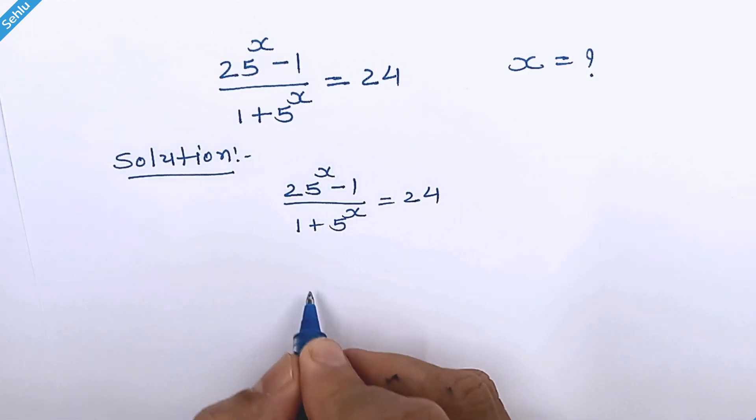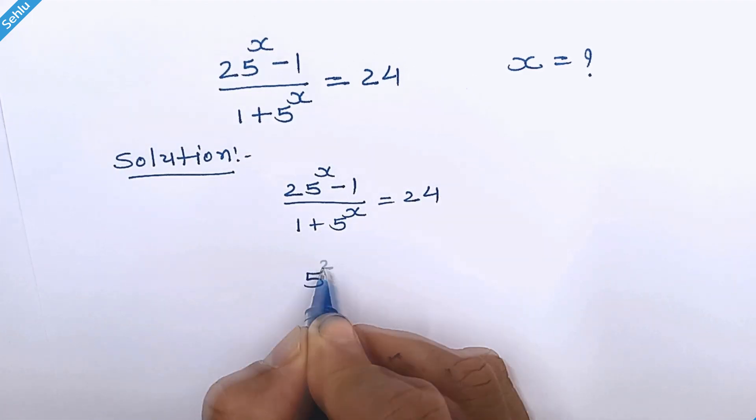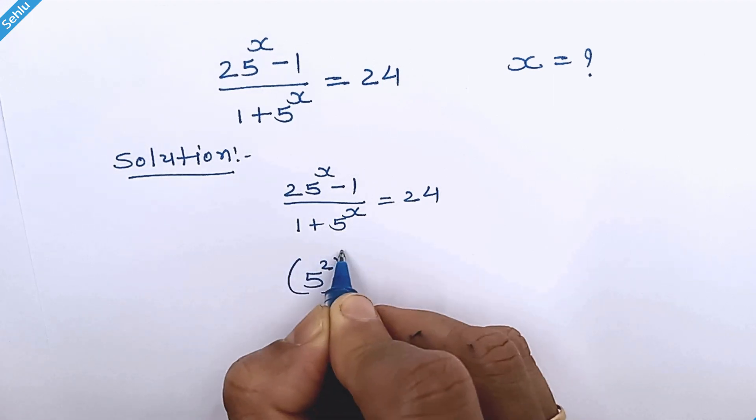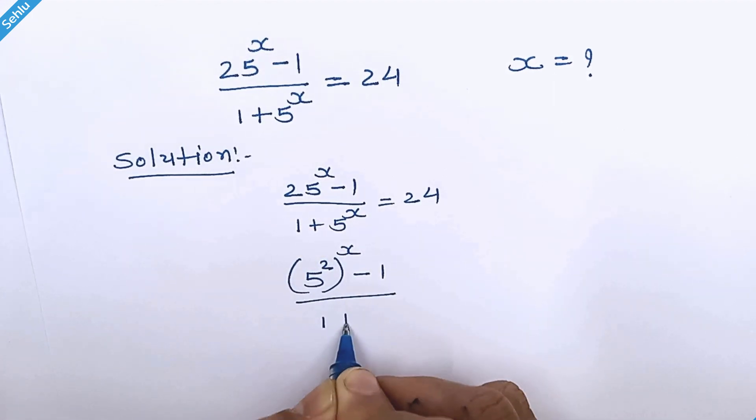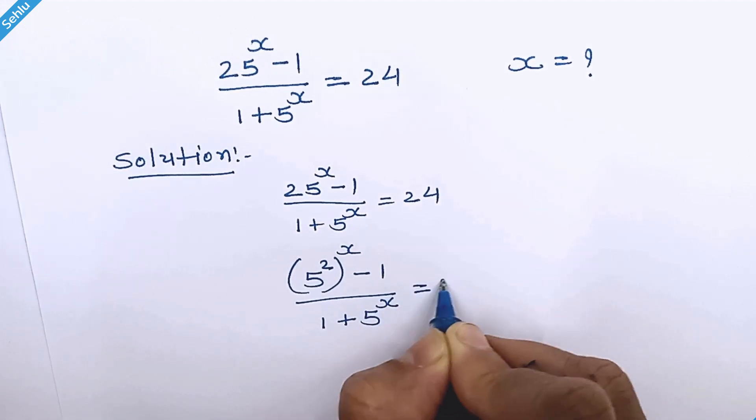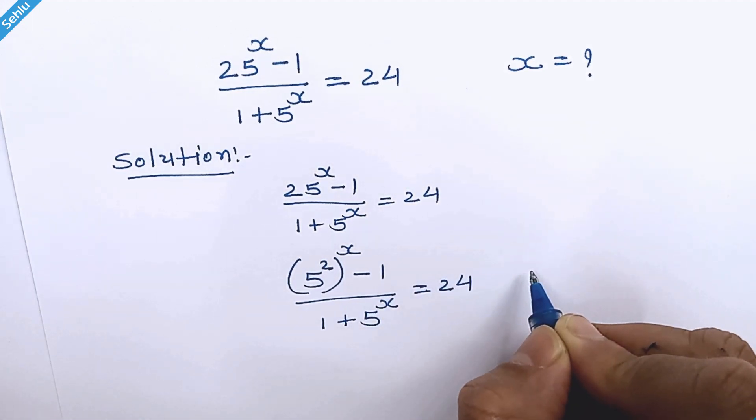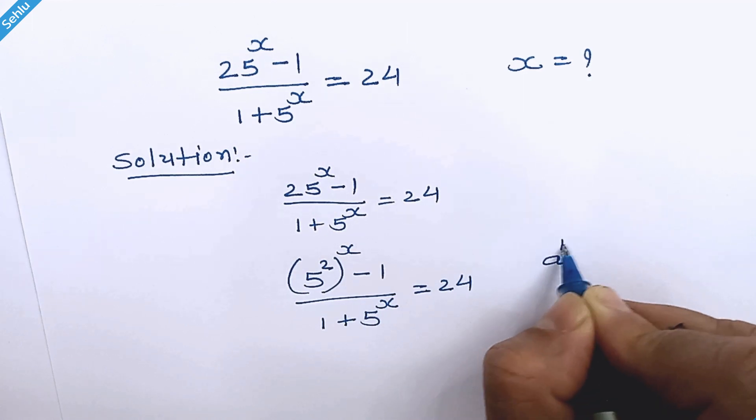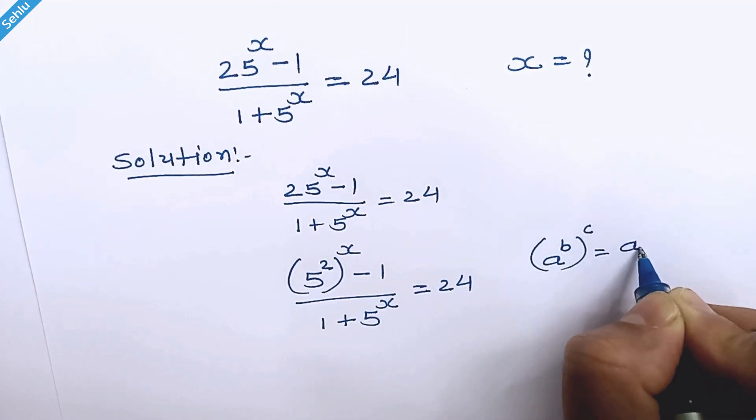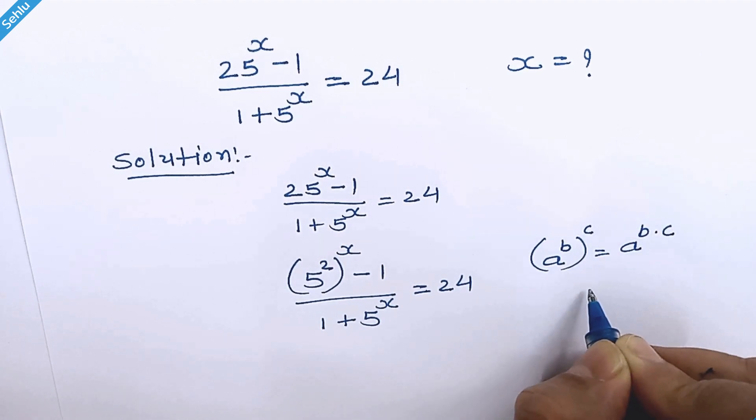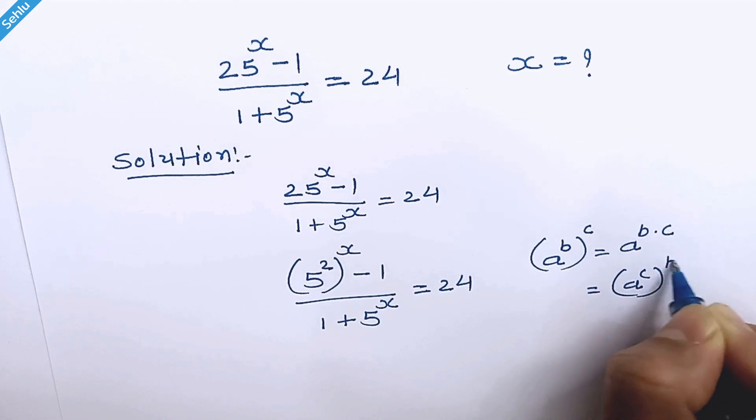25 is 5 square so we can write 5 square whole raised to x minus 1 over 1 plus 5 raised to x is equal to 24. Now let's remind the rule where a raised to b whole raised to c then it will be a raised to b times c and it can be also written as a raised to c whole raised to b.